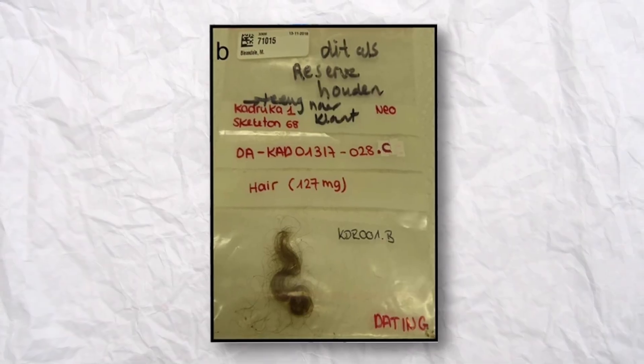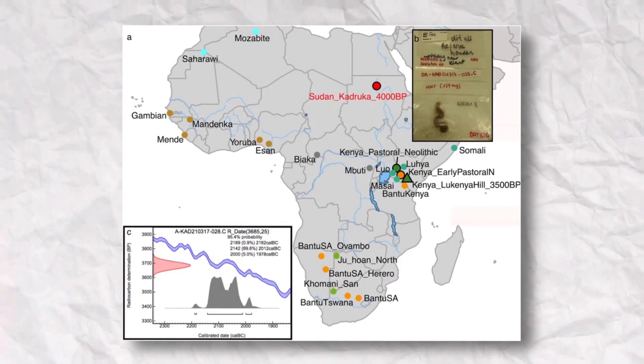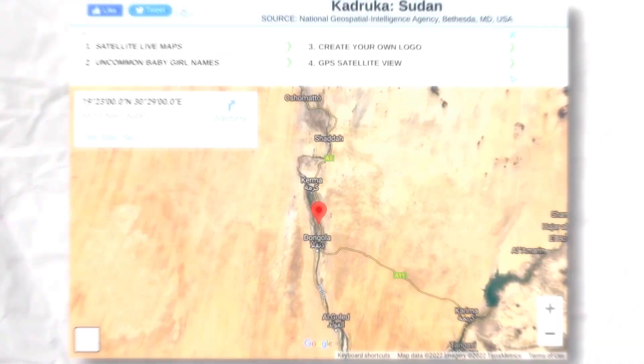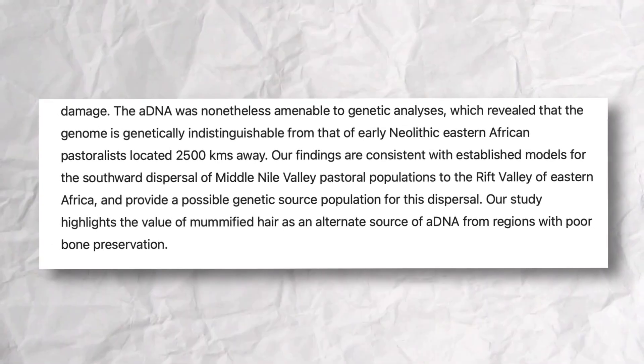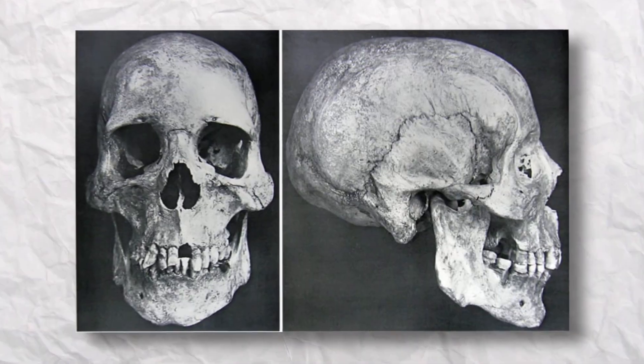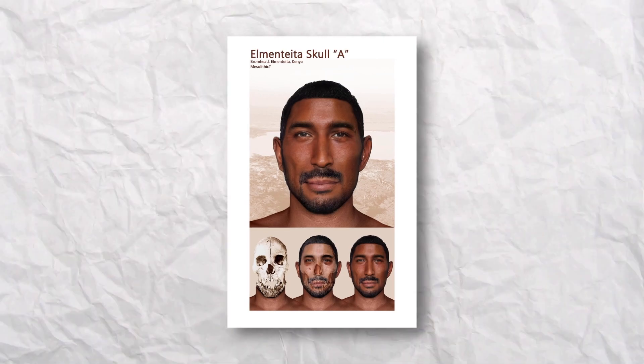When we look at the genetics, there was a 4,000-year-old DNA sample obtained from a hair sample at a site called Kadruka. What was remarkable about this sample is that it was described as genetically indistinguishable from early Savannah Pastoral Neolithic populations that lived in Kenya. These Kenyan pastoralists were likely Southern Cushitic and were really a three-way mixture between Levantine Eurasian, East African Nilotic, and Mota-related populations.